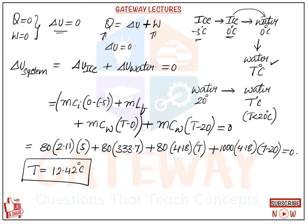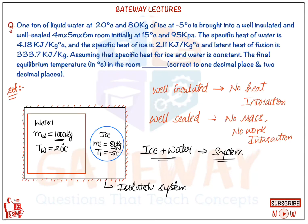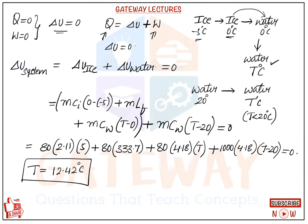This is a good question that causes confusion. The room conditions — temperature and pressure — are given because a room always has some state, but here we assume that ice and water completely occupy the entire room, leaving no space for heat interaction with the room air. So ice and water are taken as our system. This is a very good numerical — thanks for watching.